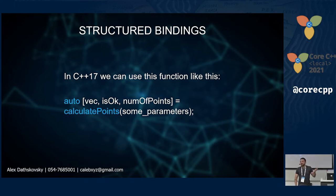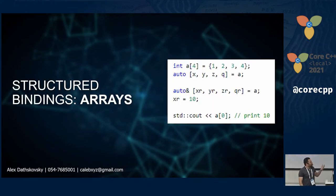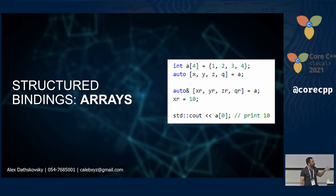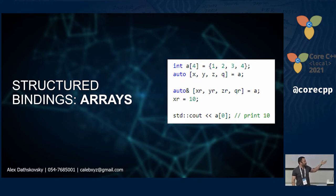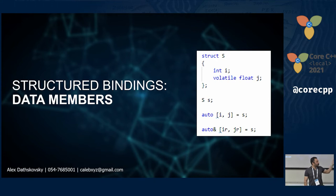A few things to know about structural bindings: they work very well for tuples, but for pairs, looking at the disassembly, there are more assembly lines generated. Structural bindings also work with arrays — here you see an array of four integers unpacked in one line. You can do the same without copying using auto reference. Data members of structs can be unpacked as well, using auto with the assignment itself.